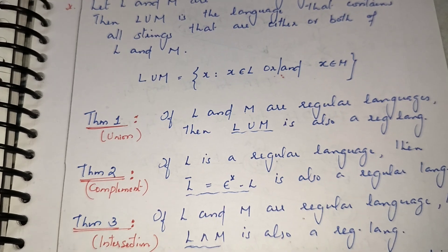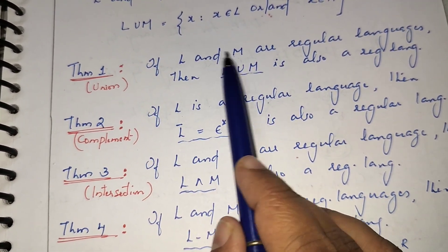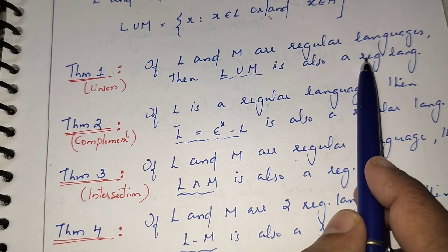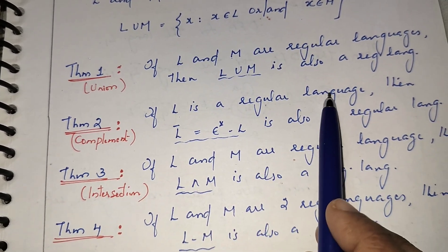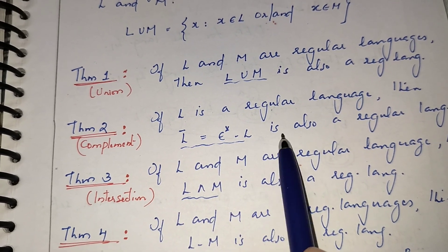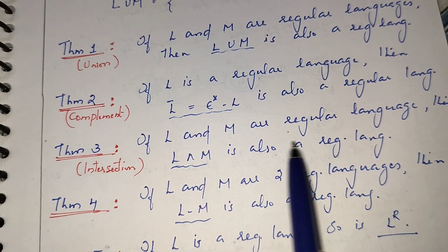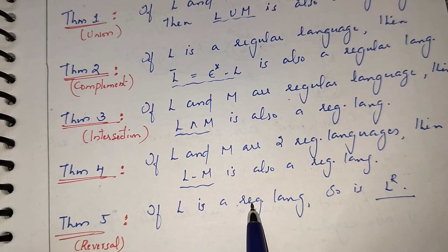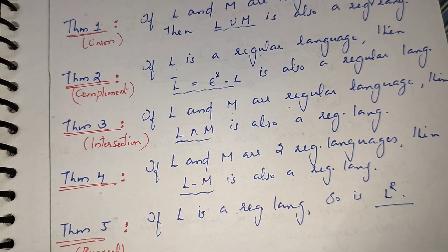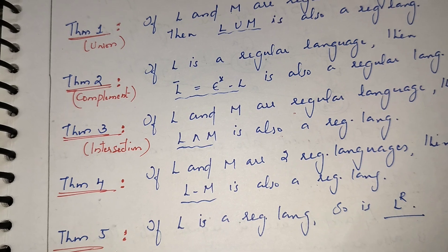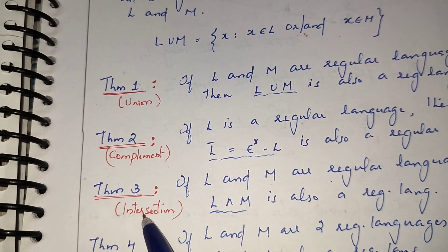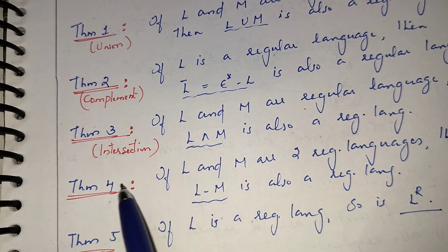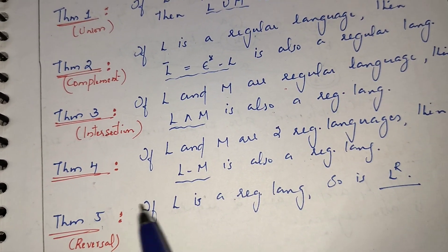So if L and M are two regular languages, then the union of these two regular languages is a regular language. The complement of L means epsilon-star minus L, which is also a regular language. The intersection of two regular languages is a regular language. The set difference of two regular languages is a regular language. And the reverse of a regular language is also a regular language.